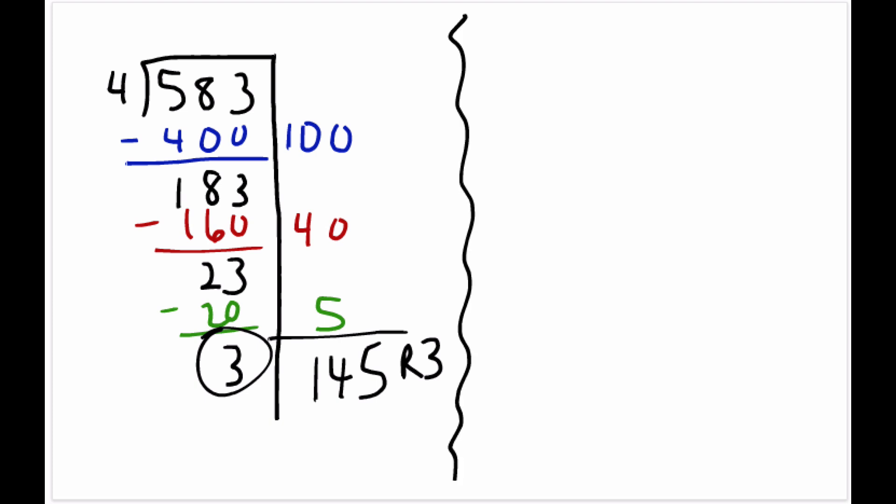Now, the cool thing is that was a pretty efficient way, but students don't have to do it that way. They could have done it a different way. So let's do 583 and here's our running tally down the right. And we could say, how many times does 4 go into 583?